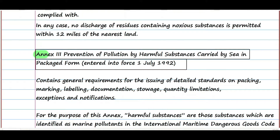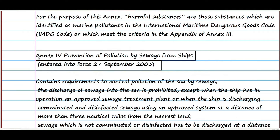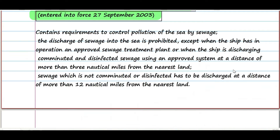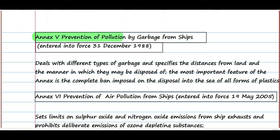Annex 3 is the prevention of pollution by harmful substances carried by sea in packaged form, which entered into force on 1st July 1992, and includes the IMDG — the International Maritime Dangerous Goods code. Annex 4 is the prevention of pollution by sewage from ships, which entered into force on 27th September 2003. Annex 5 is the prevention of pollution by garbage from ships, which entered into force on 31st December 1988.